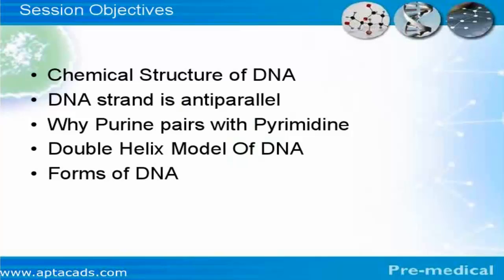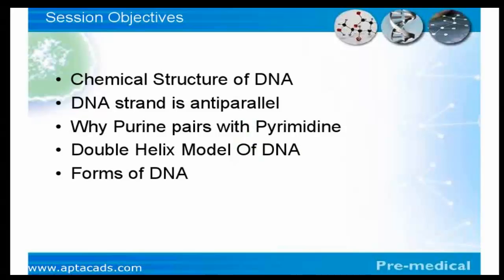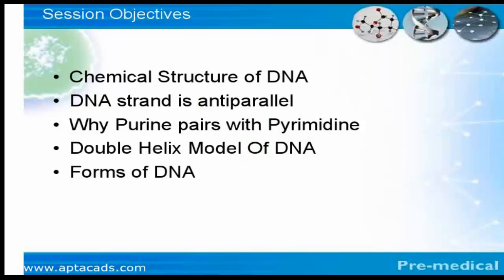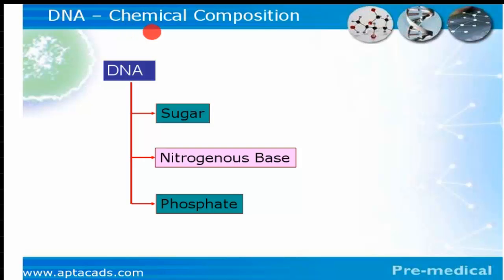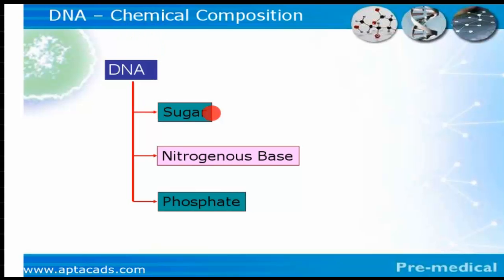In this session we are going to study the chemical structure of DNA, the antiparallel nature of DNA, why purine pairs with pyrimidine, and the double helix model of DNA. Chemically speaking, DNA consists of three things: sugar, nitrogenous bases, and phosphate. We will discuss all three one by one.